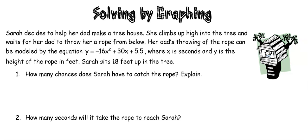We have Sarah. Sarah decides to help her dad make a treehouse. She climbs up high into the treehouse and waits for her dad to throw her a rope from below. Her dad's throwing of the rope can be modeled by our quadratic equation given here where x is in seconds and y is the height of the rope in feet.